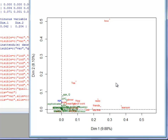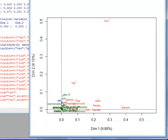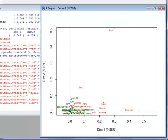In this variables graph, the active variables are shown in red, the supplementary categorical variables in green, and the supplementary continuous variables in blue. The coordinate corresponds to the squared correlation ratio between the dimension and the qualitative variable for categorical variables, and the squared correlation coefficient between the dimension and the variable for continuous variables.